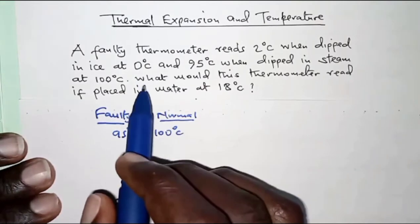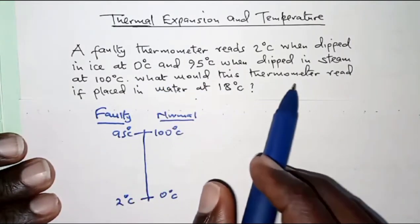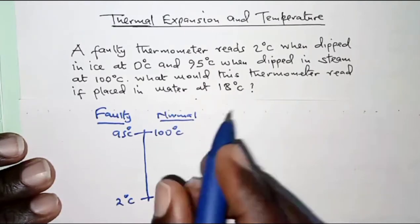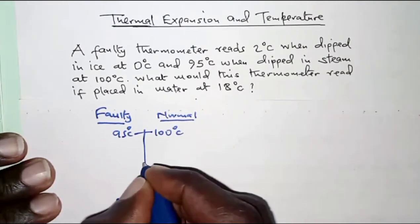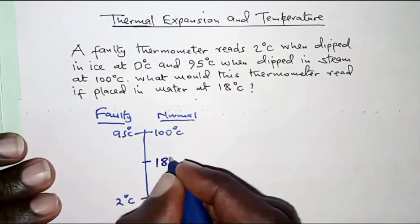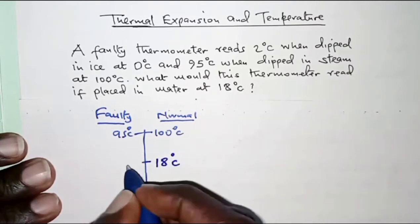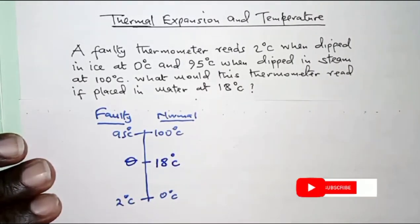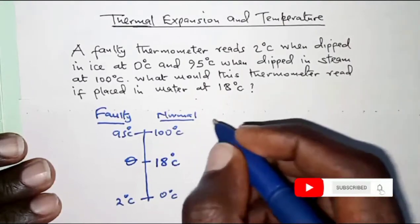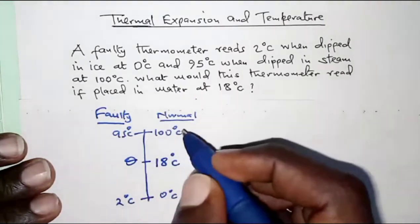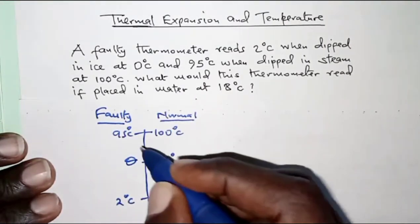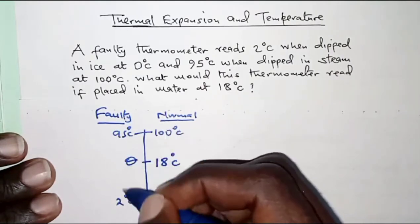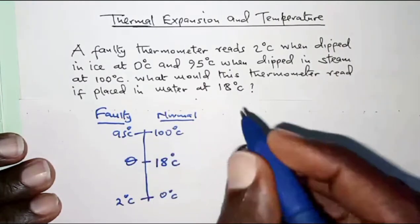We are asked: what would this thermometer read if placed in water at 18 degrees Celsius? If the temperature is 18 degrees Celsius, what would this thermometer read? Let that reading be theta. The ratio of the temperature range for the normal thermometer should be the same as the ratio of the temperature range for the faulty thermometer.